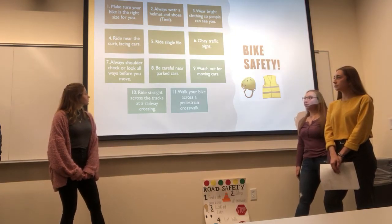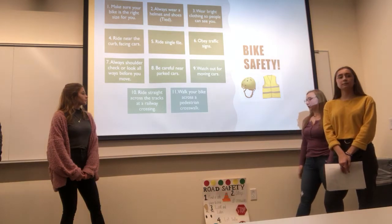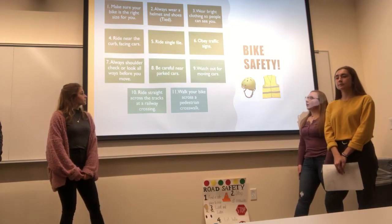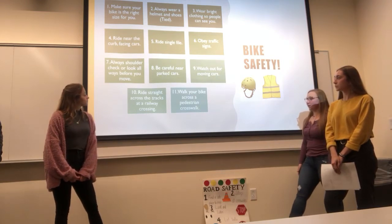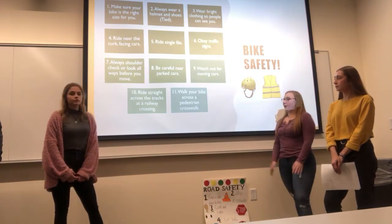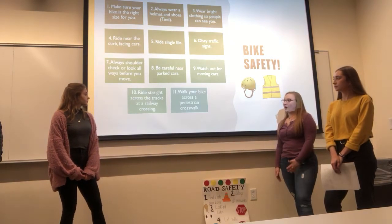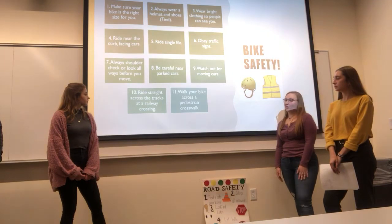Always shoulder check or look both ways before you move — check left, right, left, right again, then look and listen before crossing the road. Be careful near parked cars because you don't know when they're going to be moving. Watch out for moving cars because they can be dangerous when you're on a bike. Ride straight across the tracks at a railway crossing because if your tire gets stuck in the railroad you could fall and hurt yourself. And make sure you walk your bike across a pedestrian crosswalk, because if you fall off in the middle of the road that could be a problem for cars that don't see you.